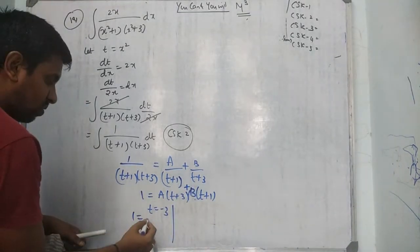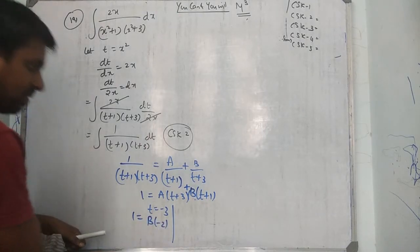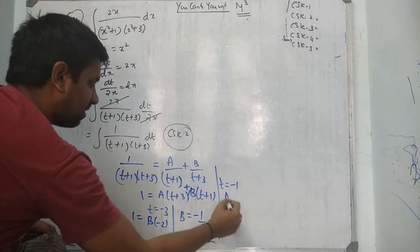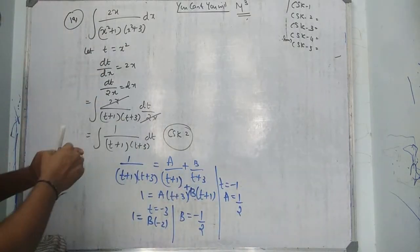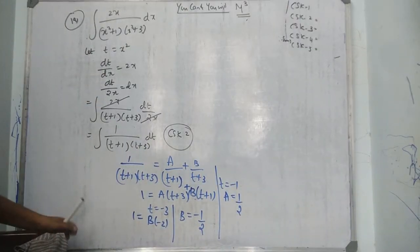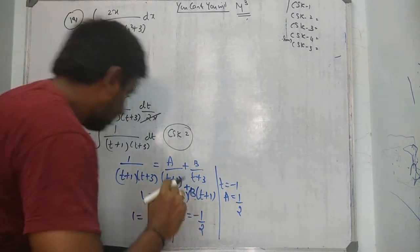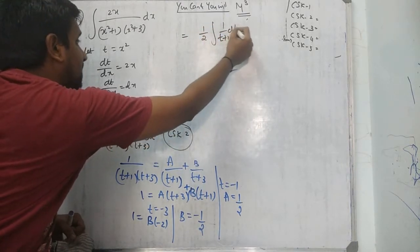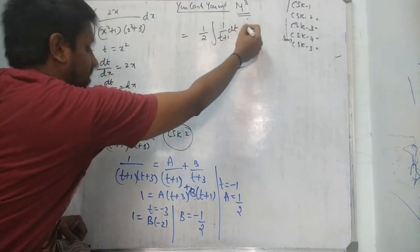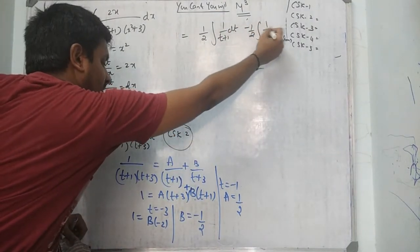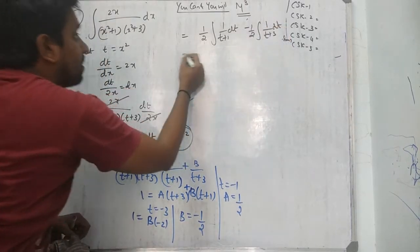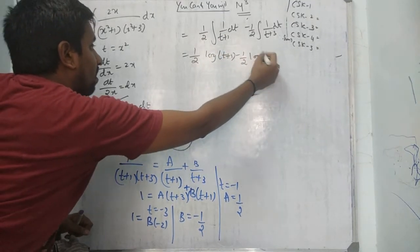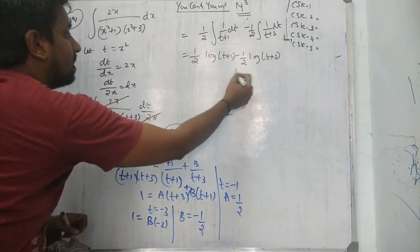Put t equal to minus 3: B value is minus 1/2. Put t equal to minus 1: A value is 1/2. Substitute these values. Therefore: 1/2 times 1 over (t + 1) dt minus 1/2 times 1 over (t + 3) dt. Integrating: log of (t + 1) gives 1/2 log t+1 and minus 1/2 log t+3, where the denominator differentiates to give the numerator.